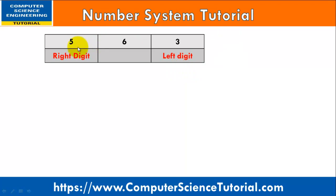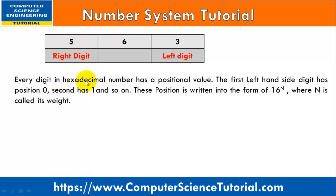Here I have a hexadecimal number 563. The leftmost digit is called the most significant digit and the rightmost digit is called the least significant digit. Every digit in a hexadecimal number has a positional value. The rightmost digit has positional value 0, then 1, then 2, then 3, and so on. This positional value is written in the form of 16 to the power n, where 16 is the base of the hexadecimal number.